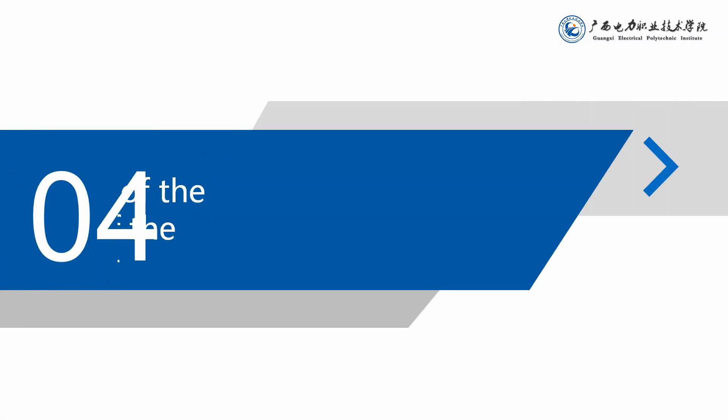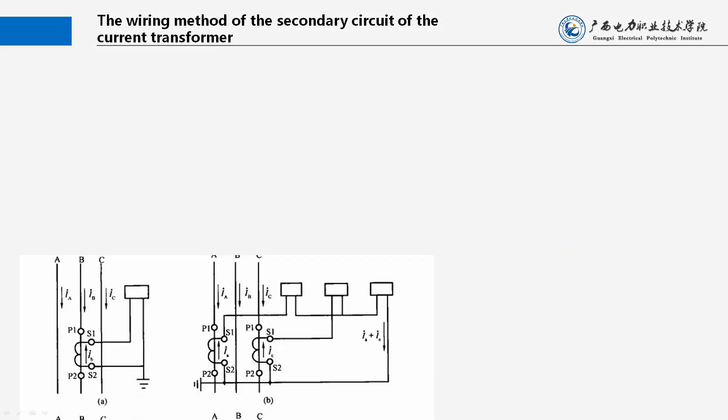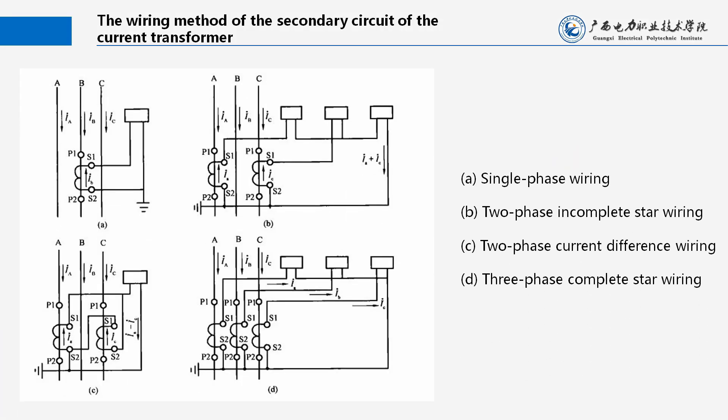The wiring methods of the secondary circuit of the current transformer: A. Single phase wiring. B. Two phase incomplete star wiring. C. Two phase current difference wiring. D. Three phase complete star wiring.